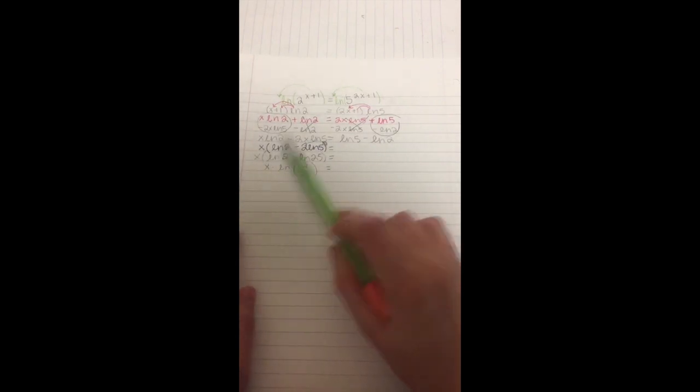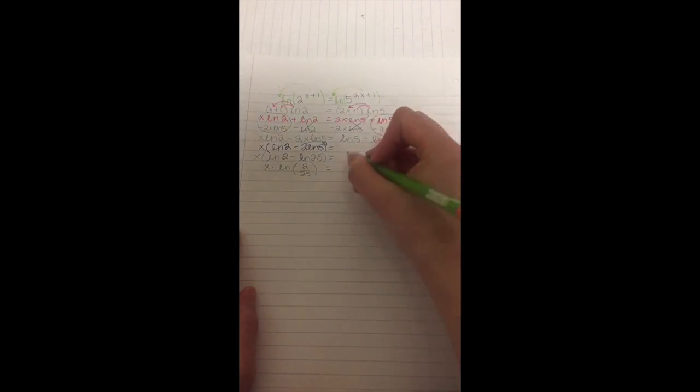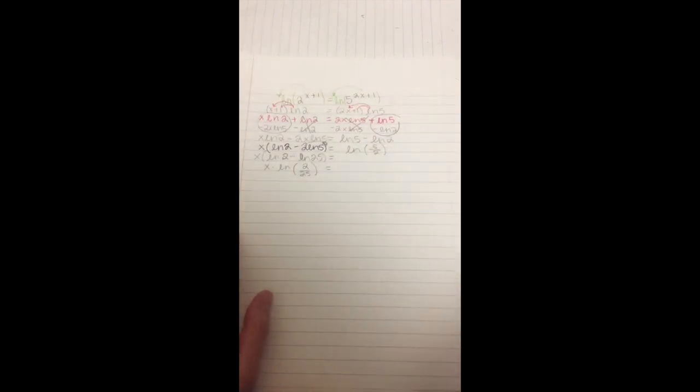And then don't forget the equal sign again. And then leave that there, we can go on to this one. Since we did the same thing, we're going to do the same thing we did here to here. So the natural log of 5, because remember that's positive, over 2 on the bottom, because that's negative.